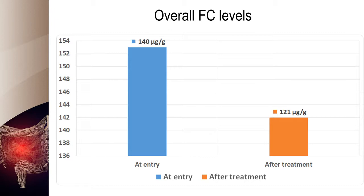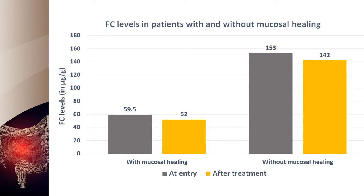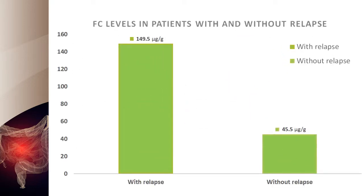Overall, the median fecal calprotectin levels showed a significant decrease after treatment. A significant decrease in fecal calprotectin levels was observed in patients who achieved mucosal healing, but no significant reduction was noted in patients without mucosal healing. The median fecal calprotectin level at the end of granulomonocytophoresis therapy was significantly higher in patients who relapsed than in those without relapse.